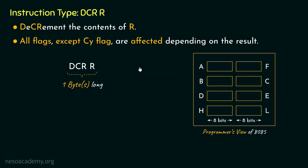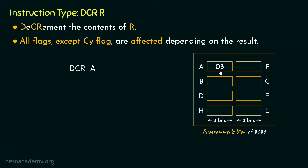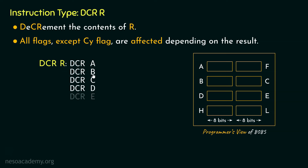Say within the accumulator register we have the value 03. If the microprocessor executes the instruction DCRA, this will decrement the value, making it 02H. This instruction subtracts 1 from the contents previously inside the accumulator. The different variations include DCRA, DCRB, DCRC through DCRL, and also DCRM.